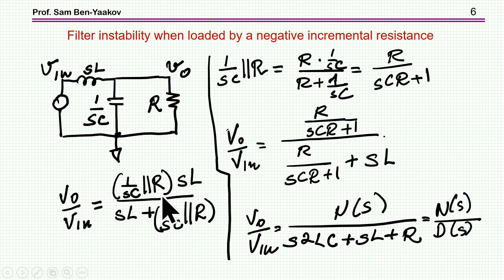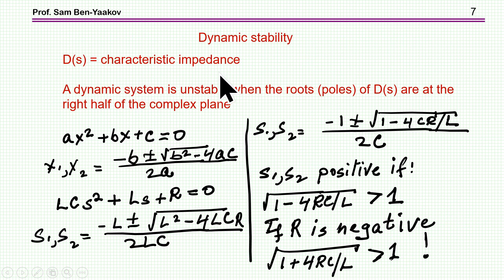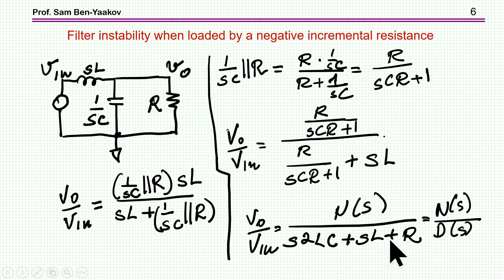Now this parallel network comes up to be this expression, so therefore the transfer function from here to here is as shown here. Now I'm doing sort of reorganizing this equation, and I'm looking now at the denominator, which is here, and the numerator. I'm not that much interested in the numerator because the denominator is the so-called characteristic impedance, and we know that a dynamic system will be unstable when the roots or poles of this polynomial, of this characteristic impedance, are at the right half of the complex plane.